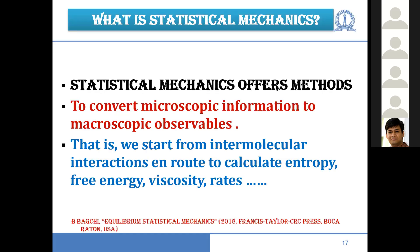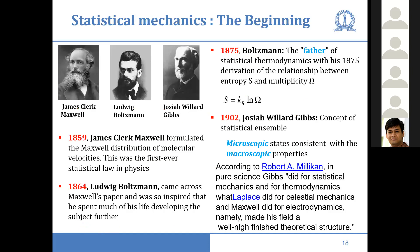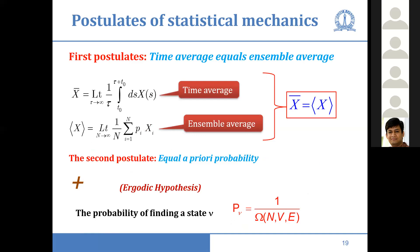We convert microscopic information to macroscopic observables — we did that last time. The fathers who created time-dependent statistical mechanics include Willard Gibbs, more associated with equilibrium, while Maxwell and Boltzmann are more credited with non-equilibrium statistical mechanics. We talk of two kinds of averages: time averages and ensemble averages. Boltzmann did the time average, Gibbs introduced the ensemble average, and the postulate of statistical mechanics says they are the same — this is the ergodic hypothesis.